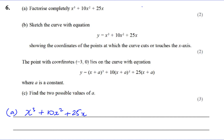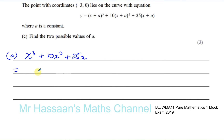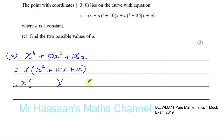To factorize this completely, we need to see if there are any common factors - and there is. x is a common factor, then we're left with x squared plus 10x plus 25 inside the bracket. So you have x times (x squared plus 10x plus 25), and that will factorize again. It's actually a perfect square because you're going to have x plus 5 times x plus 5.